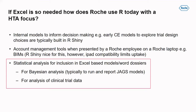This is an HTA conference, so why am I talking about Excel? Where does Roche use R today? Internal models for internal uses — early cost-effectiveness models to explore trial design are very possible to build in R and R Shiny. Account management tools, particularly budget impact models, when going to be presented by a Roche employee are a good use case. R Shiny can do this very nicely, although unfortunately it doesn't play so nicely with iPads, and a lot of our field force use iPads, which is a limitation.